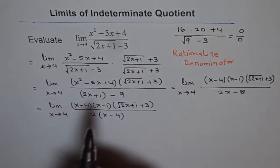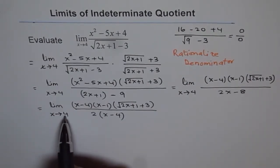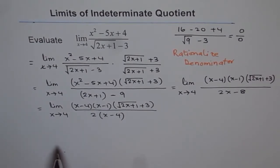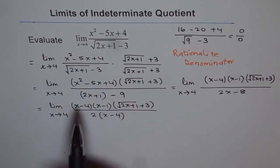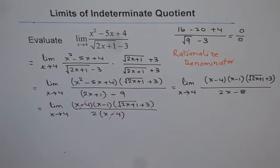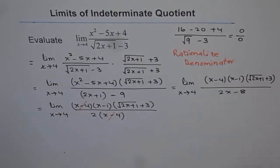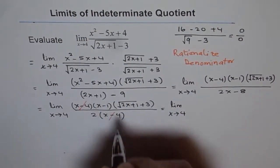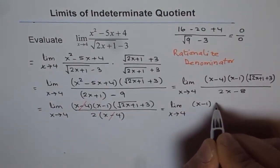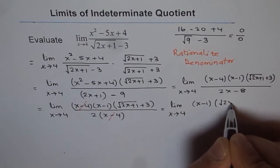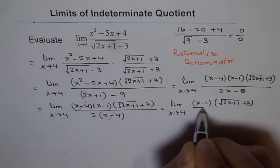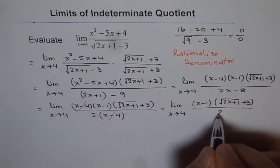Since we got 0 over 0 with x approaching 4, x minus 4 should be a factor in both numerator and denominator. By rationalization and factoring we did get it. So we can cancel x minus 4 and simplify. We get the limit as x approaches 4 of x minus 1 times square root of 2x plus 1 plus 3, divided by 2.